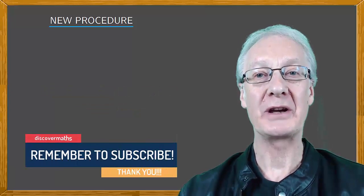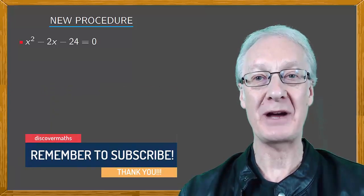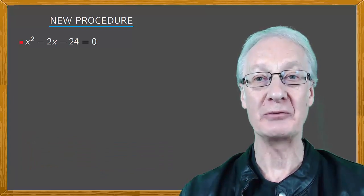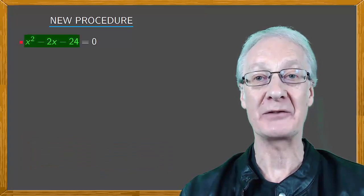We're going to solve the equation x squared minus 2x minus 24 equals zero. And we're going to do this by taking the square root of x squared minus 2x minus 24.